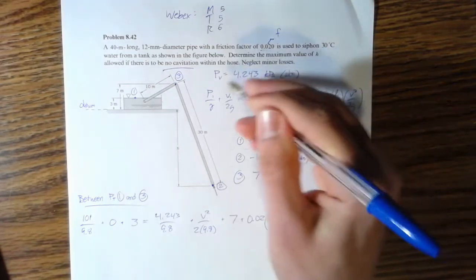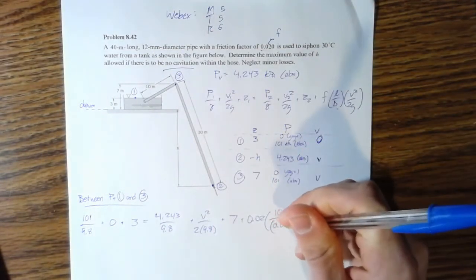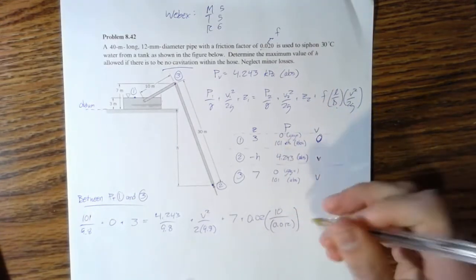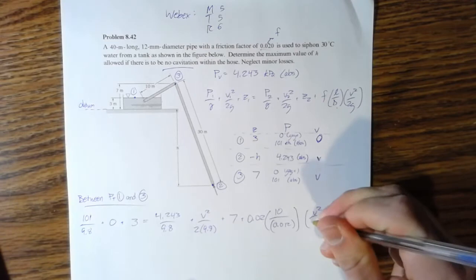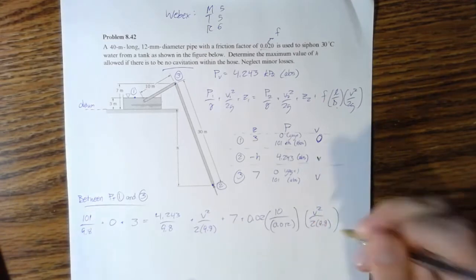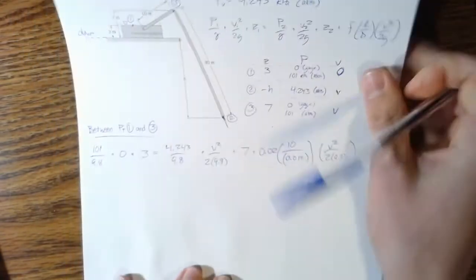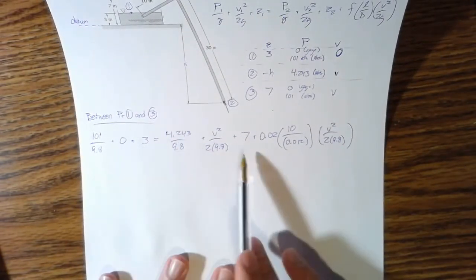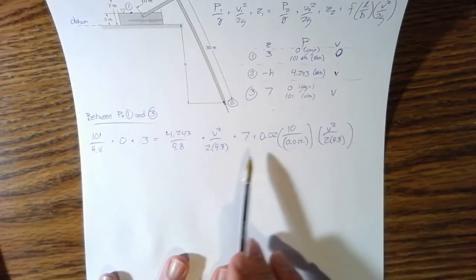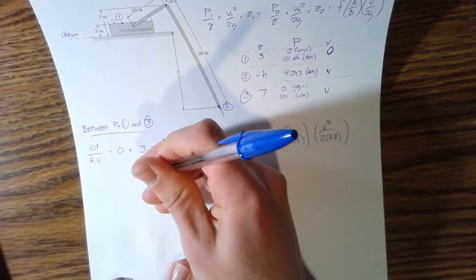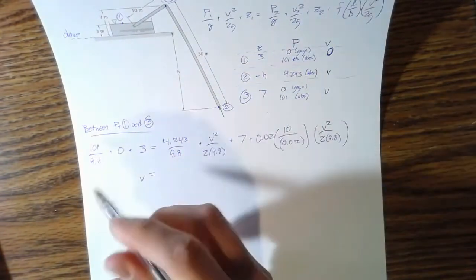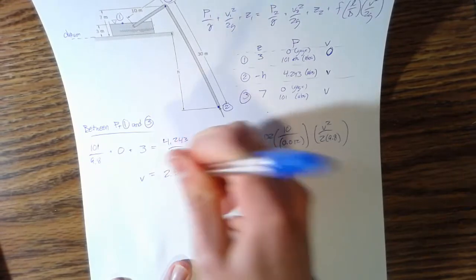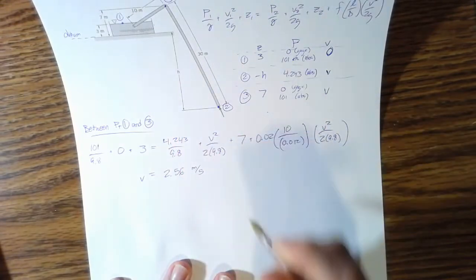Our diameter is 12 millimeters, so that's 0.012 meters. Velocity squared over 2 times 9.8. You can do the algebra here - move this over, factor out your v squared, divide stuff over, but what you'll get in the end is that your velocity is 2.56 meters per second. So that's velocity in the pipe.